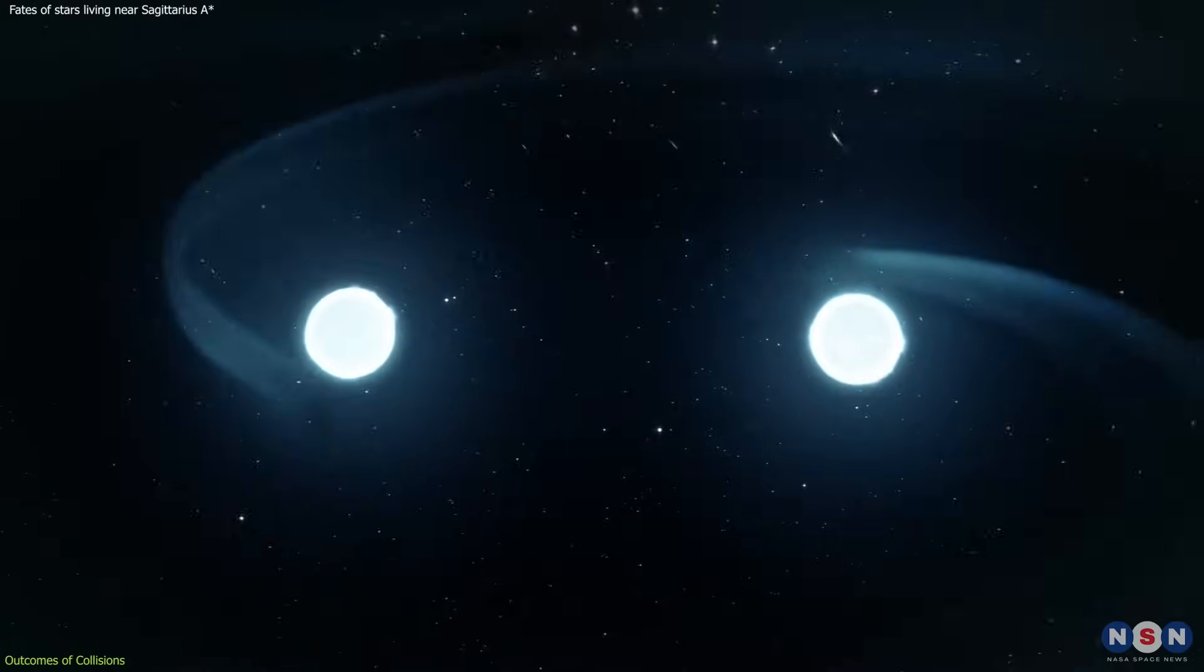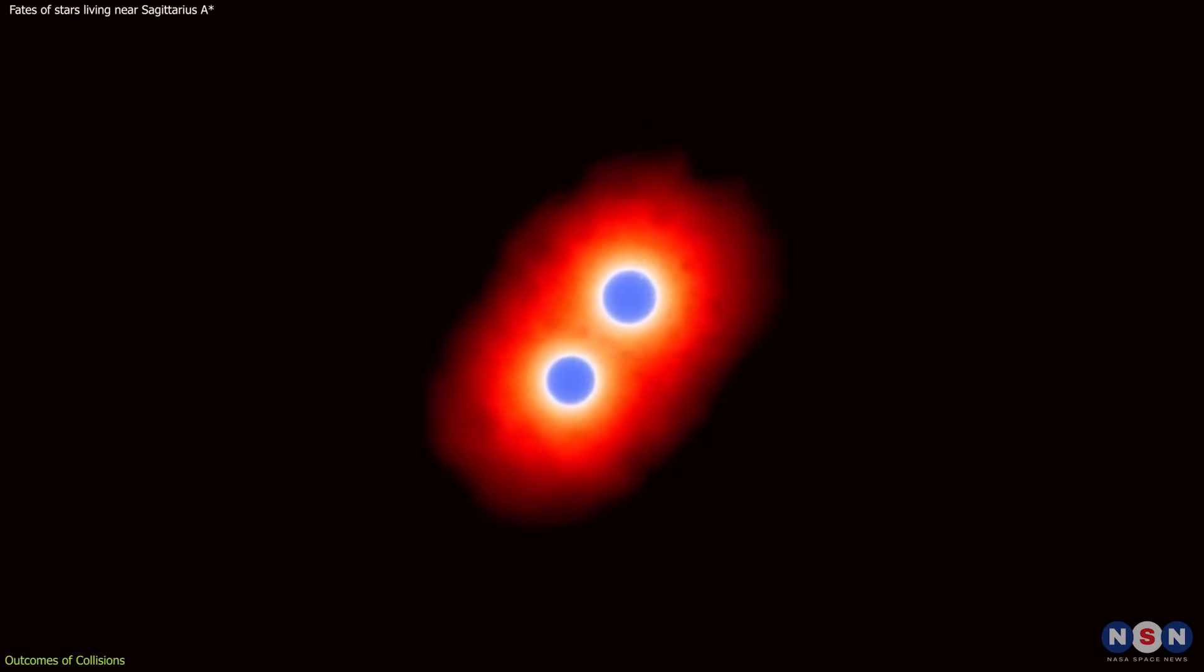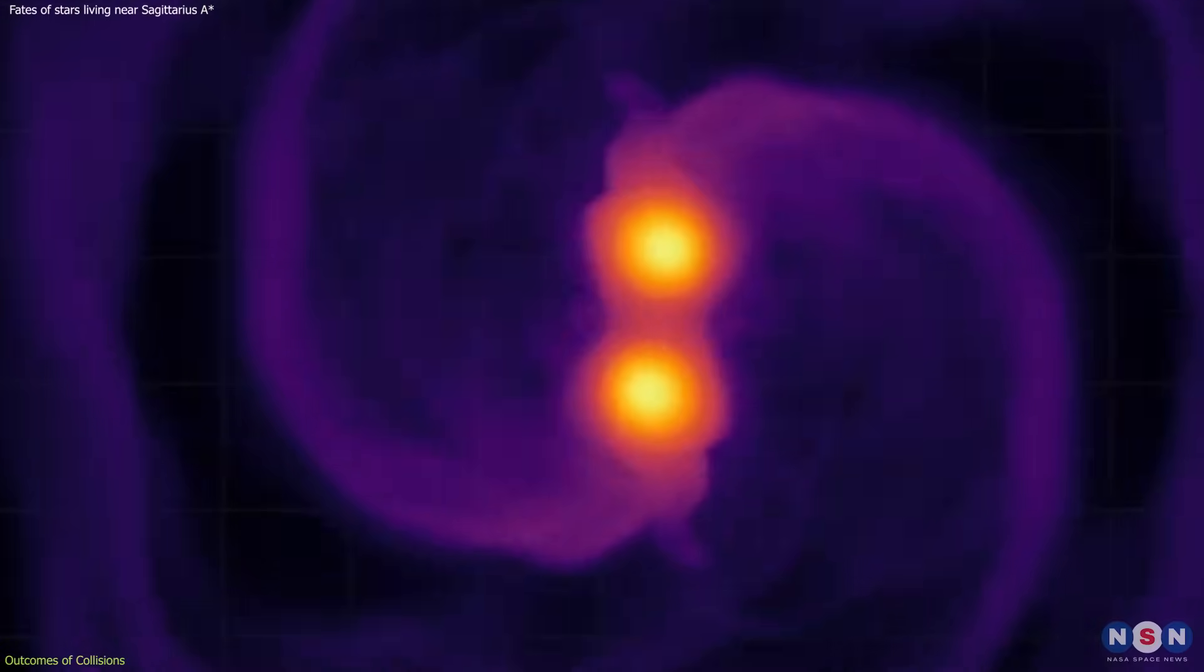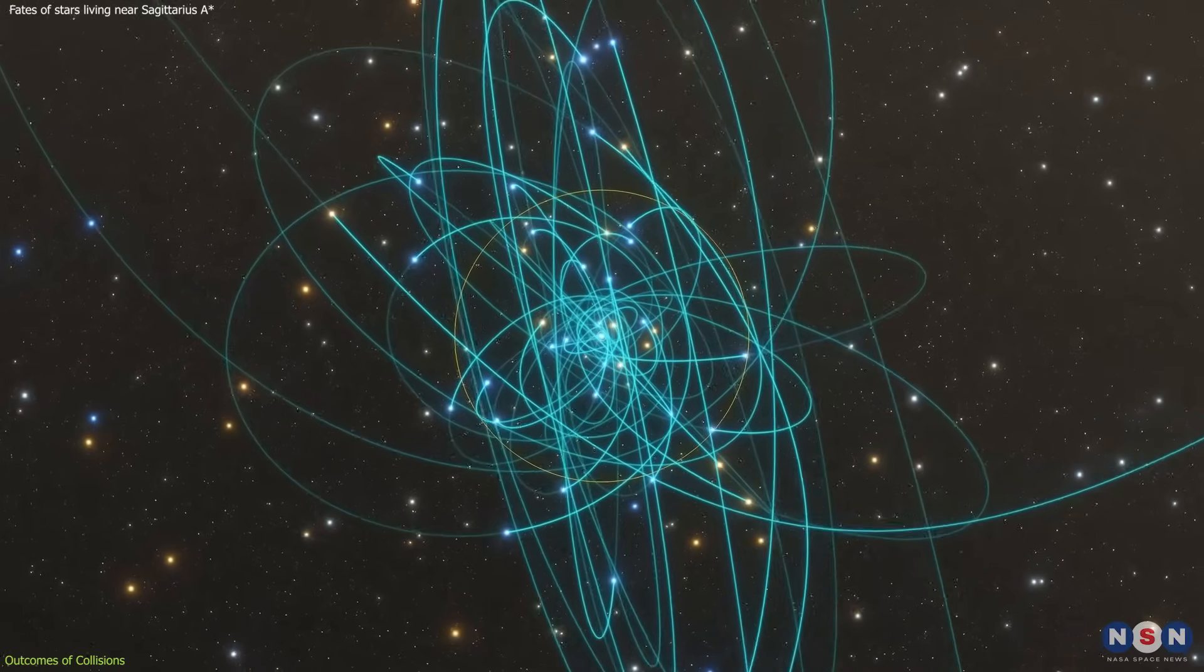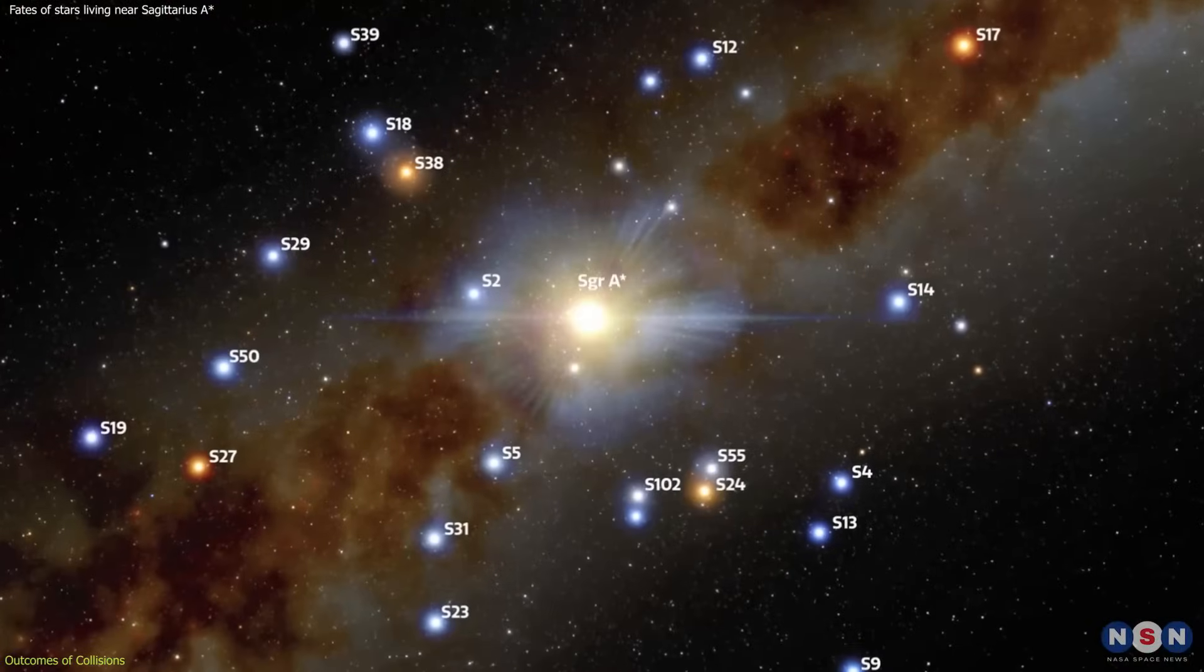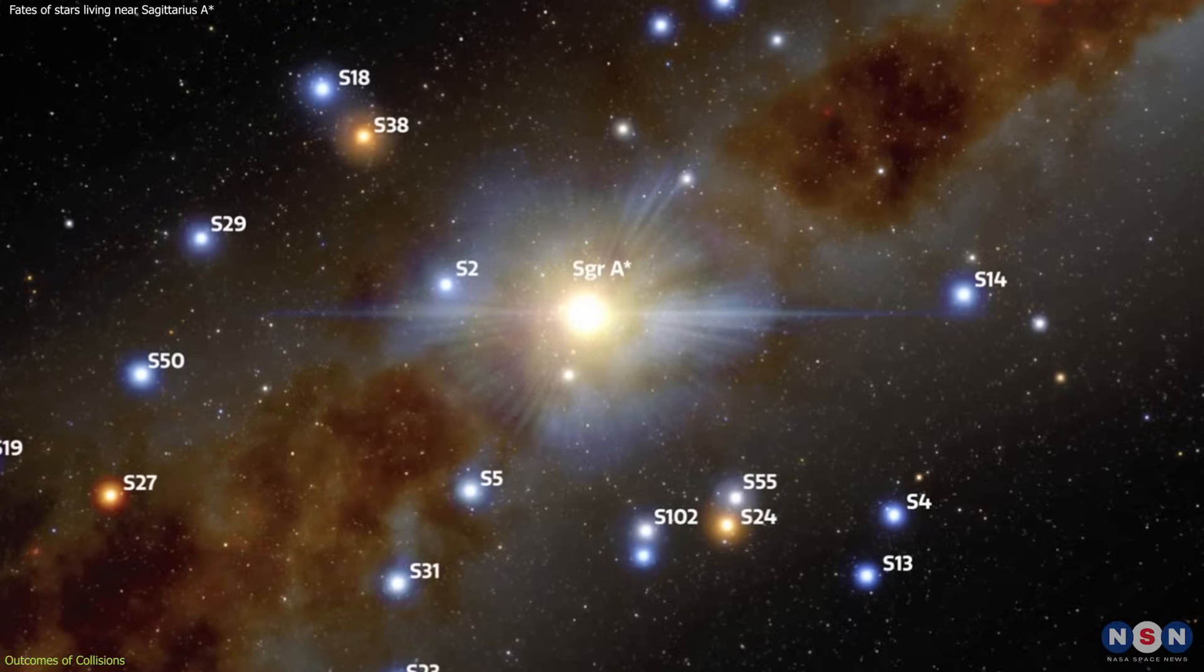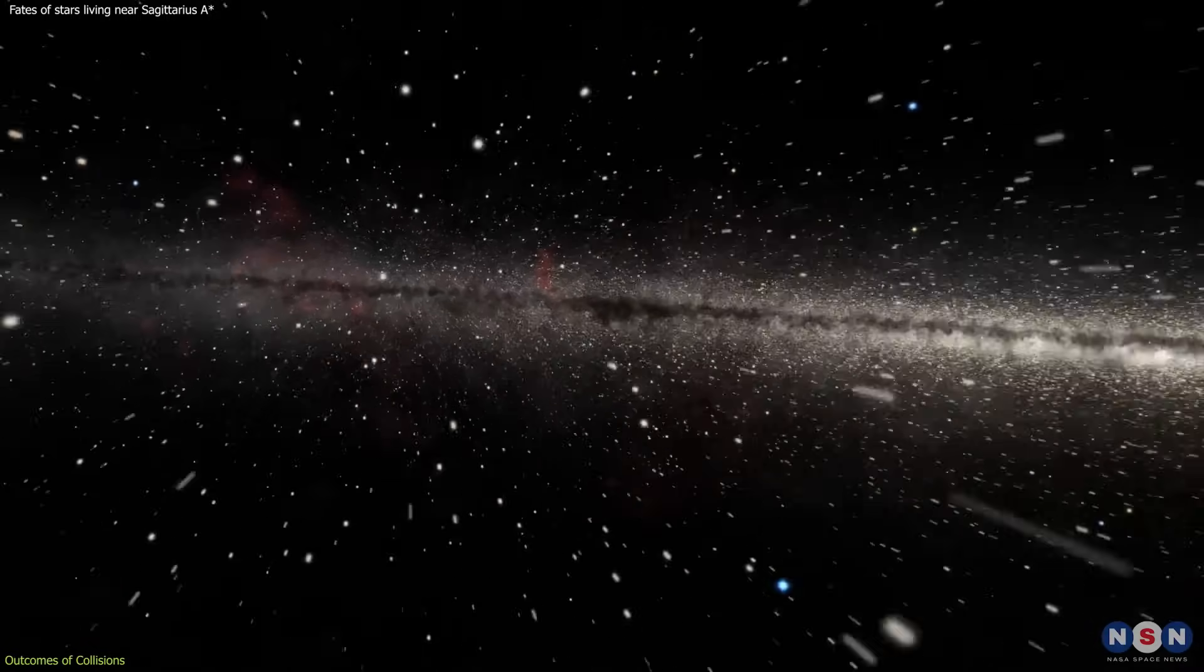The process of stripping can vary in intensity. Some stars may lose only a small fraction of their outer layers, while others can be stripped down to their cores. The extent of the stripping depends on the specifics of the collision, such as the relative speeds of the stars and the angle of impact. These stripped-down stars contribute to a diverse stellar population in the galactic center, showcasing a range of masses and luminosities not typically seen in more tranquil regions of the galaxy.